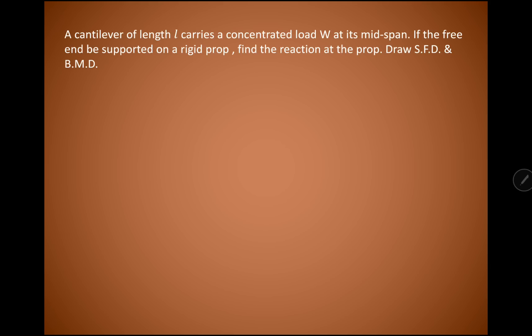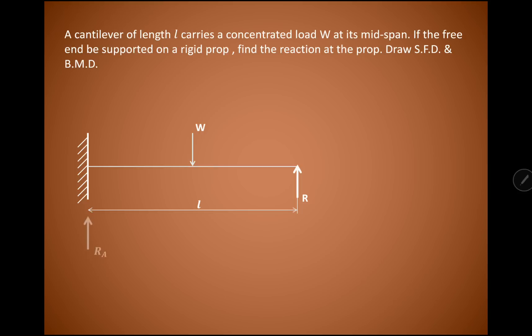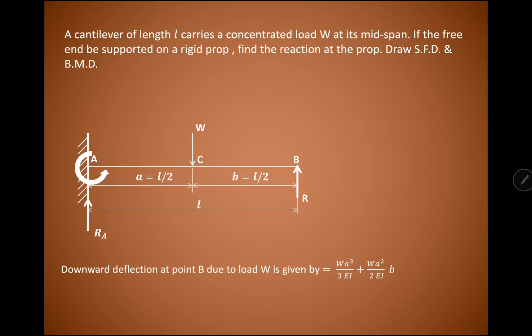In this video we will try to understand what is the meaning of a prop cantilever beam and how to draw shear force and bending moment diagram in that case. As shown here, we have a cantilever beam carrying a central point load W with total span length L. The cantilever is supported at the free end, and R is the support reaction. Such a beam is known as the prop cantilever beam.